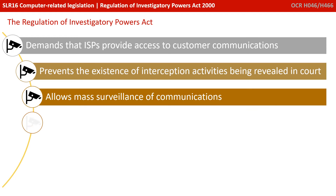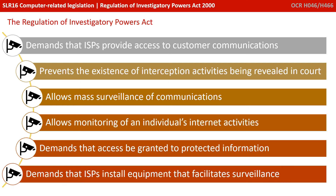Under RIPA there are several things which these bodies can do. They can demand that internet service providers provide access to a customer's private communications. They can also prevent the existence of this interception activity being revealed in court. It allows for mass surveillance of communications and monitoring of an individual's internet activities. RIPA can be used to demand access to protected digital information, and they can also demand that ISPs install equipment which facilitates surveillance and monitoring.